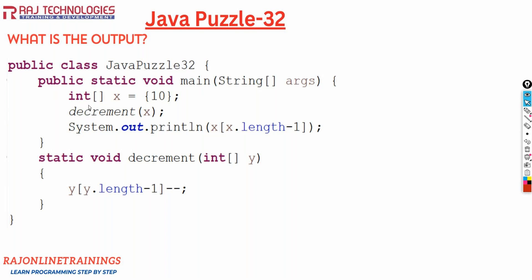In this puzzle, we are going to create a class JavaPuzzle32 with main method inside and here we are going with an array. Integer array x equal to 10. The value of x array is 10 and we are invoking a method decrement, passing this x array as an argument. So this x array will go to this argument and enter into y, and after that it's going to decrement the value. Once it comes back we are printing the value of this x array.